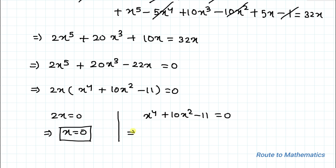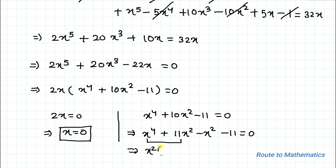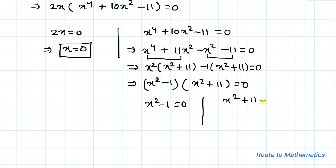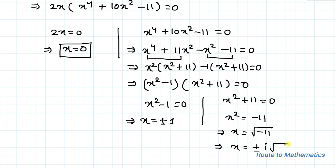To solve x^4 + 10x^2 - 11 = 0, we rewrite 10x^2 as 11x^2 - x^2: x^4 + 11x^2 - x^2 - 11 = 0. Factoring: x^2(x^2 + 11) - 1(x^2 + 11) = 0, giving (x^2 - 1)(x^2 + 11) = 0. Thus x^2 - 1 = 0 gives x = ±1, and x^2 + 11 = 0 gives x^2 = -11, so x = ±i√11.